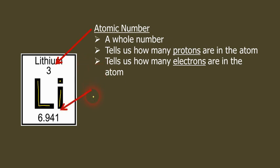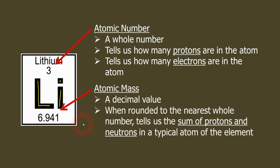And then there's another number. Notice that there's a decimal number down here, which in this case is 6.941. And that's called the atomic mass. Some textbooks call it the atomic weight. Those are interchangeable terms. The atomic mass is a decimal value. And if you take that number and round it off to the nearest whole number, so in this case that would be about equal to 7, that's going to tell us the sum of the protons and neutrons in a typical atom of the element.